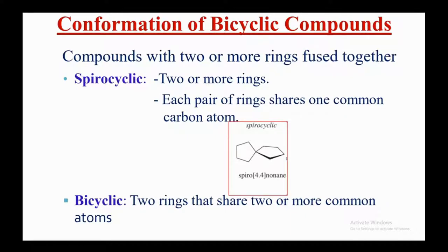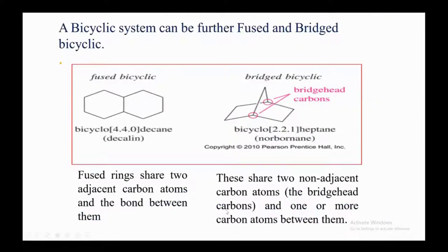The next class of bicyclic compounds is bicyclic — two rings that share two or more common atoms. A bicyclic system can be further classified as fused or bridged. This is a fused bicyclic system called bicyclo[4.4.0]decane or decalin, and the other type is a bridged bicyclic compound.